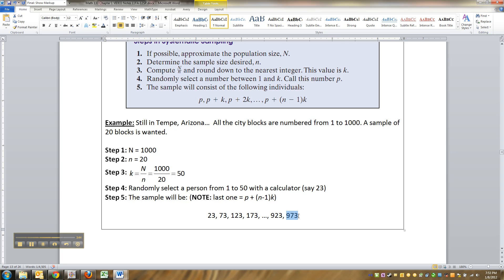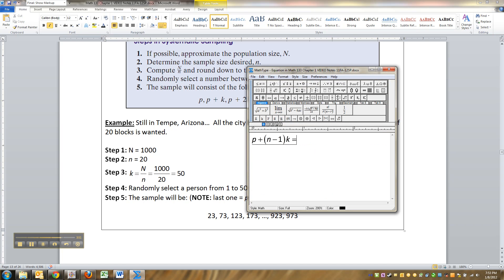Up until the last one. The last one will be this formula. P, which was twenty-three plus, I wanted nineteen, so it's really twenty take away one, if you will, times K, and K we found was fifty.